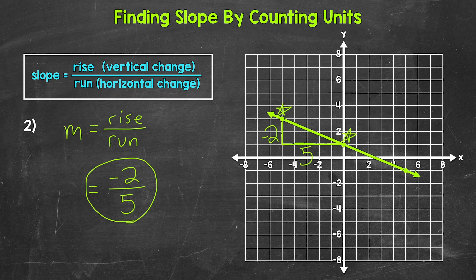Just to check, let's use this point and this point to see if we get the same thing. Our vertical change is one unit, two units down — so negative two. Then the run, the horizontal change: one unit, two units, three units, four units, five units — so our run is five. Same slope. Let's move on to number three.